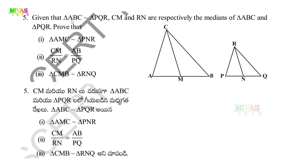Question Number 5. Given that triangle ABC is similar to triangle PQR. CM and RN are respectively the medians of triangle ABC and triangle PQR. We need to prove that CM/RN = AB/PQ.